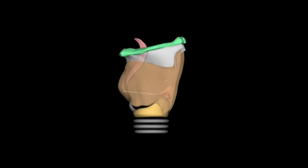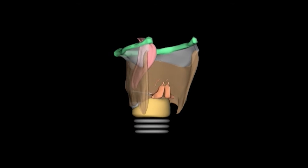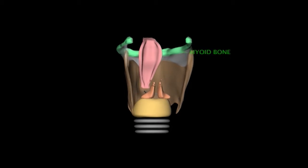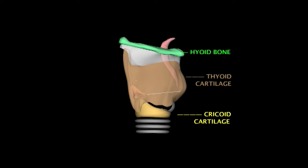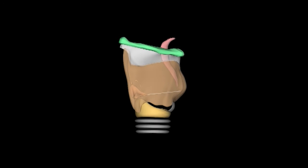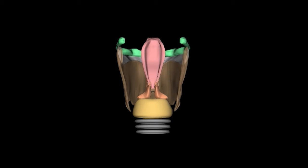The laryngeal skeleton gives the larynx rigidity and support. It's principally formed by the hyoid bone and the thyroid and cricoid cartilages. Attached anteriorly to the inside of the thyroid cartilage is the epiglottis, a curved, leaf-shaped structure.